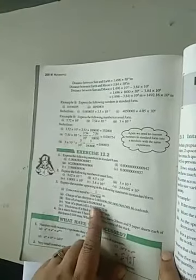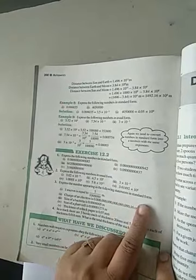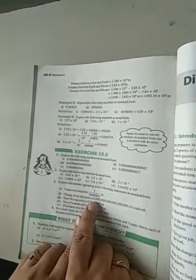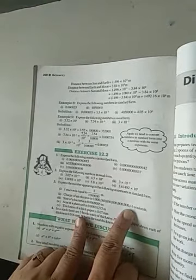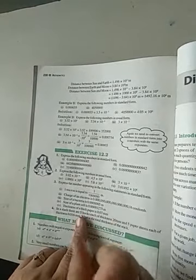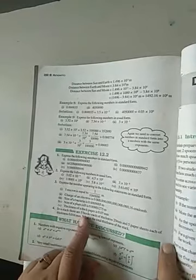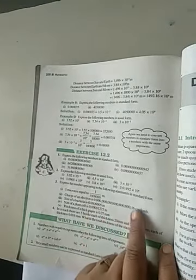Second one, charge of the electron is given 0.00000000016 coulomb. Now, here if you will count, see what we have to do? We have to write it in standard form. So, shift this point here, after the 1, because in standard form there must be 1 digit before the point. In standard form, before the point, there should be only 1 digit. And 1 digit is this, 1. So, point will come here after the 1. Now, how many steps?